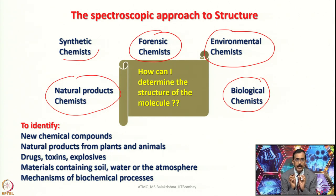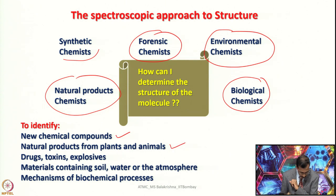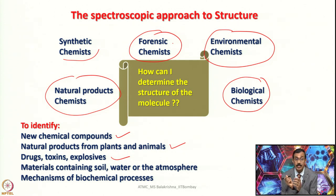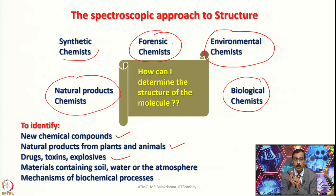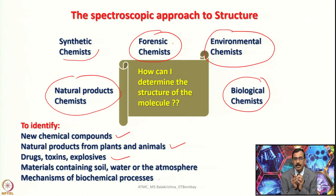Spectroscopic methods are very handy for identifying new chemical compounds, natural products from plants and animals, drugs, toxins, and explosives. In forensic contexts they analyze materials containing soil, water, or the atmosphere. They are also important in agricultural science and for understanding mechanisms of biochemical, inorganic, and organic processes — making spectroscopy an important tool in the present scenario.